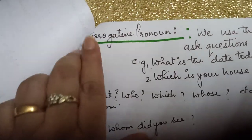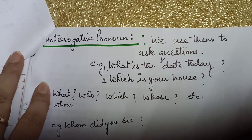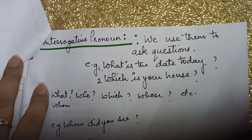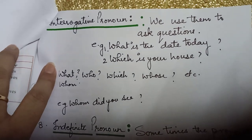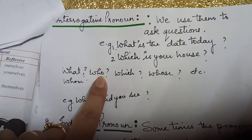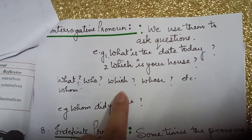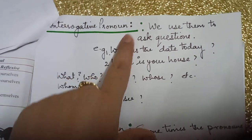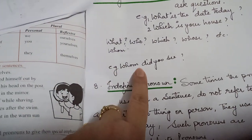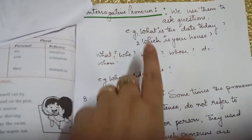Now, interrogative pronouns — we use them to ask questions. For example: 'What is the date today? Which is your house?' What, who, which, whose, whom, etc. are interrogative pronouns. For example: 'Whom did you see?' — here 'whom' is an interrogative pronoun.